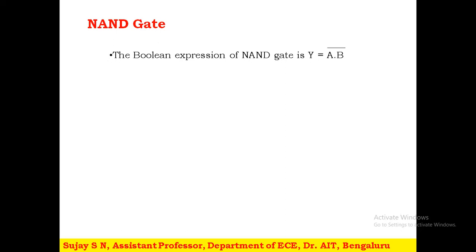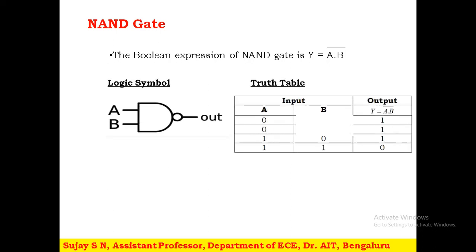Next is the NAND gate. The NAND gate is exactly the reverse of the AND gate. The Boolean expression is Y = (A · B)‾. In the logical symbol you can observe a bubble at the output of the AND gate — that makes it NAND. The truth table is exactly the reverse of the AND gate. The AND gate gives output 1 when all inputs are true; NAND gate output is 0 when A is 1 and B is 1, and in all other cases the NAND gate gives output 1.